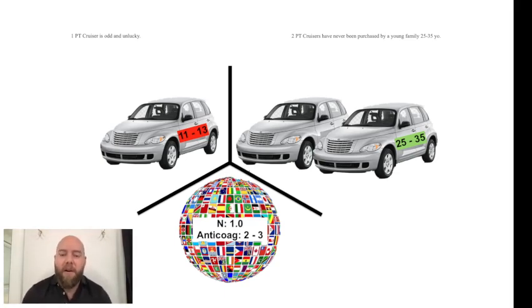Below that is INR, International Normalized Ratio, and that's represented by the globe with all the flags. The normal is just 1, that's super easy. But if they're anticoagulated on Coumadin or Warfarin or something, the normal range is 2 to 3.